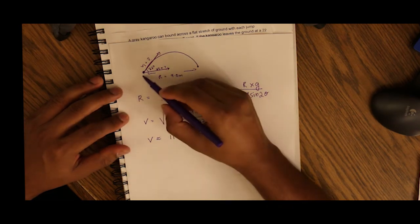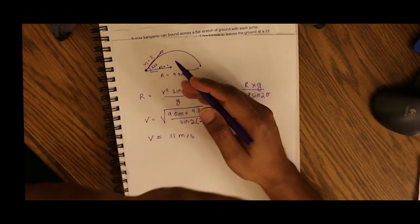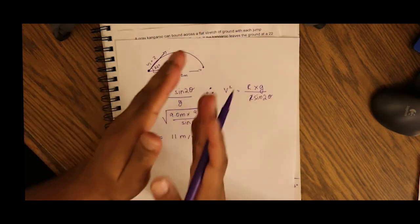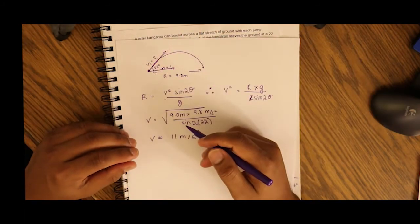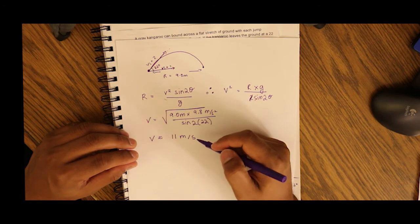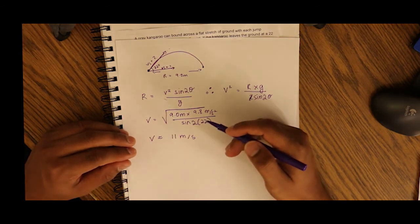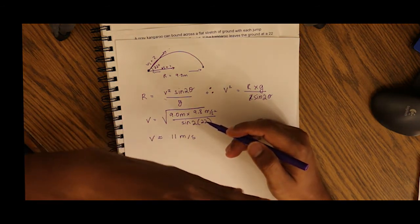So our initial velocity going in this direction, this direction as the kangaroo jumps, is 11 meters per second. Now we have to find out the velocity vector in the horizontal plane.